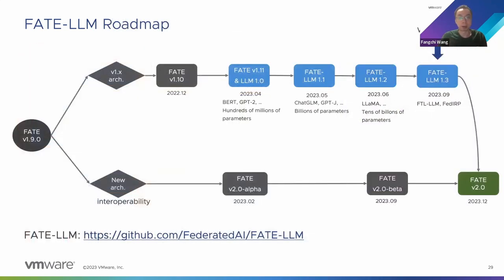This is the FATE LLM project roadmap — it is an active project that is continually evolving. There have been several releases since the initial release in the first half of this year. We recently released version 1.3 in early September, introducing the FTL-LLM paradigm and the off-site tuning framework. Meanwhile, the FATE project has another development branch, version 2.0, dedicated to interoperability among federated learning systems, which involves a lot of refactoring work in a separate branch. The plan is to merge FATE LLM, currently based on version 1.x, into the 2.0 release at the end of this year.